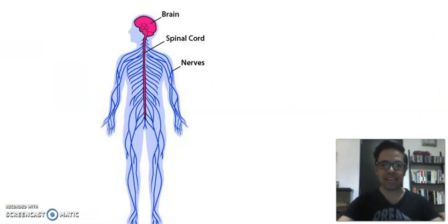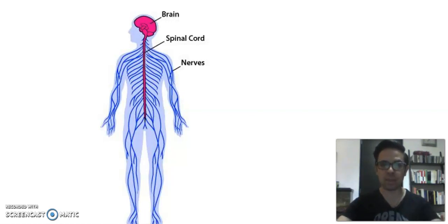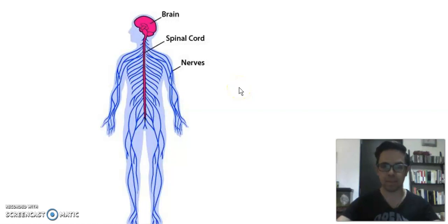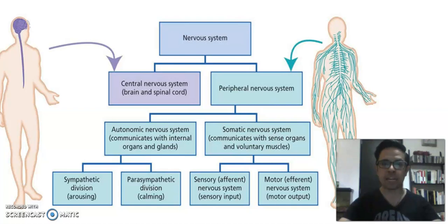The nervous system is divided into two very big areas. The first one is the central nervous system — we call it that because of its location. It is formed by two organs: the brain and the spinal cord, as shown in this diagram of the human body. The second big area is the peripheral nervous system, which goes outside the spinal cord and communicates with the rest of the body.